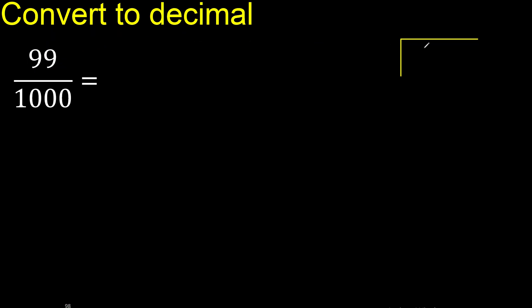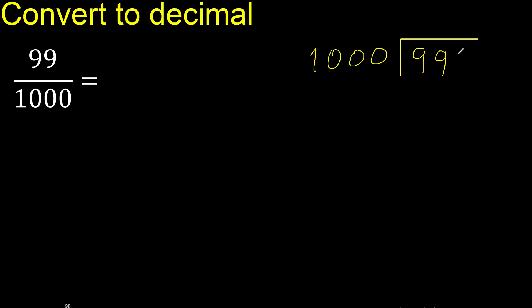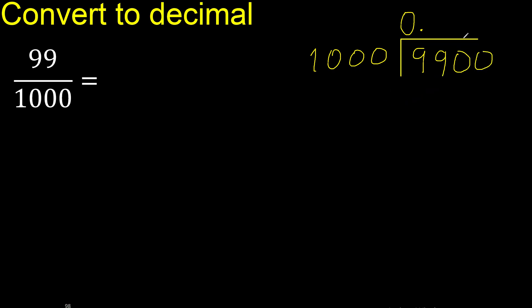99 divided by 1000. Since 99 is less than 1000, complete with 0 — write 0 point. Since it is still less, complete again with 0: 0.0.